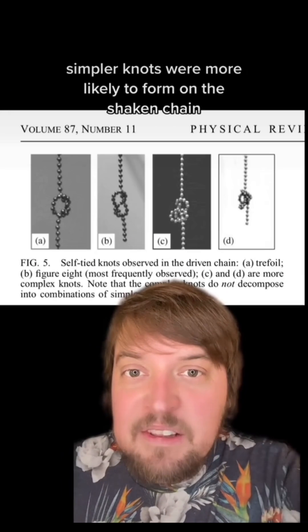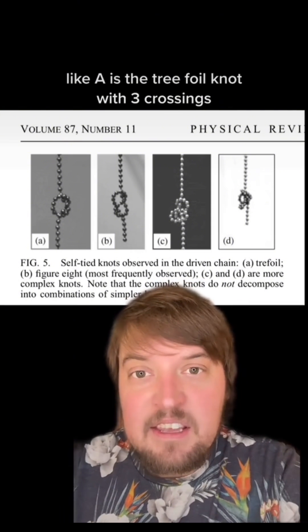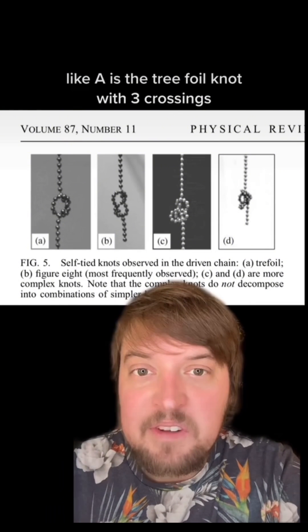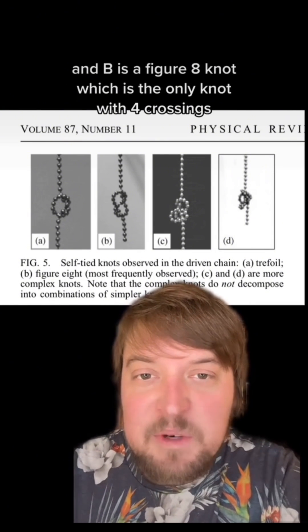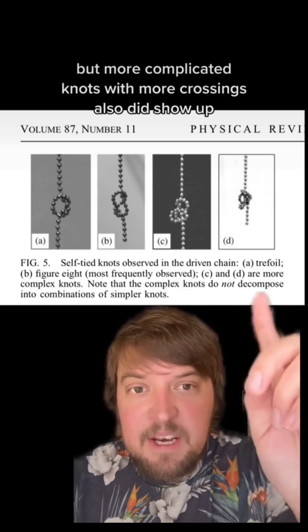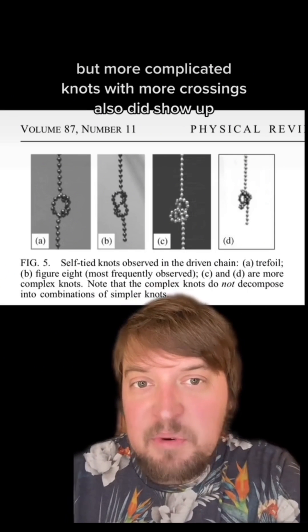Simpler knots were more likely to form on the shaken chain. A is the trefoil knot with three crossings and B is a figure eight knot which is the only knot with four crossings. But more complicated knots with more crossings also did show up.